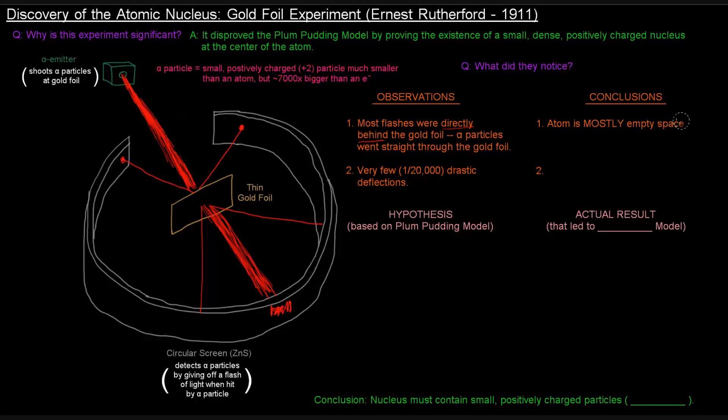So they noticed that most of the flashes were directly behind the gold foil, which meant that basically that alpha particles were going straight through the gold foil and to the other side. So what did Rutherford conclude based on that observation? He concluded that the atom is mostly empty space. If these particles are just traveling straight through, the atom must mostly be empty space.